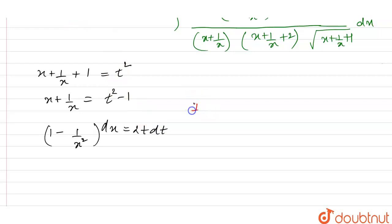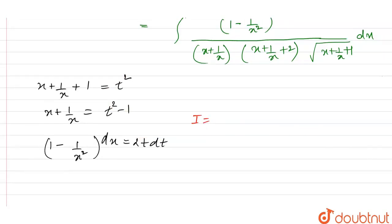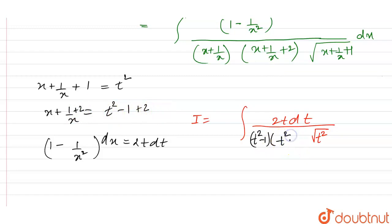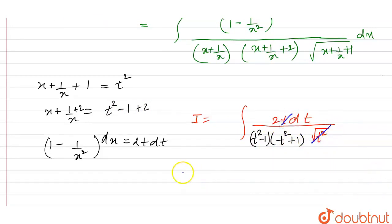Solving for i is equal to — if we put values, we have 2t dt upon root of t squared. And similarly, if we see this, x plus 1 by x is t squared minus 1 into t squared on both sides. If we add both sides too, we get t squared plus 1. So we see this t and root of t squared will cancel out.